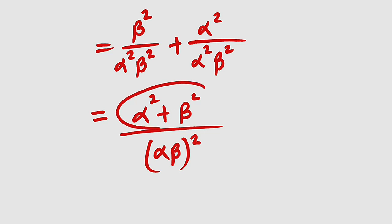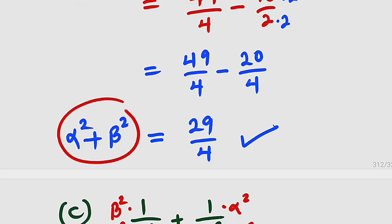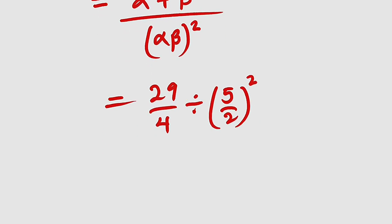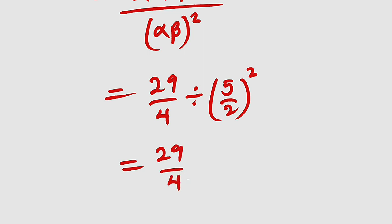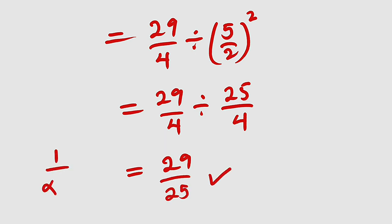We can back substitute using results from the second problem. Alpha squared plus beta squared is 29 divided by 4. And the product alpha beta is 5 over 2, but whole squared. So this is 29 divided by 4, divided by 5 squared over 2 squared, which is 25 over 4. Since we have common denominators, we can divide the numerators, giving us 29 divided by 25. Hence, 1 divided by alpha squared plus 1 divided by beta squared equals 29 over 25.